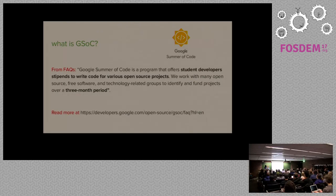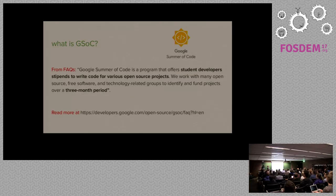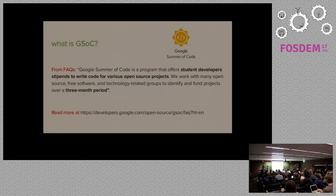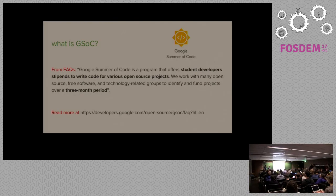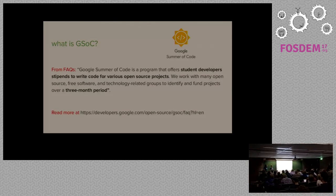Google Summer of Code is a program that has been launched by Google 12 years ago. It's aimed for student developers of university age to write code during the boreal summer — the Northern Hemisphere summer — over around three months, mentored by open source developers.